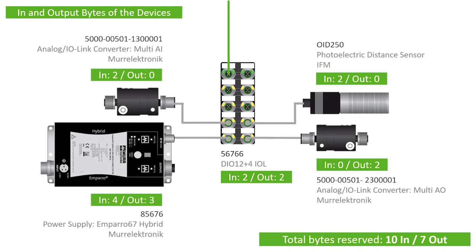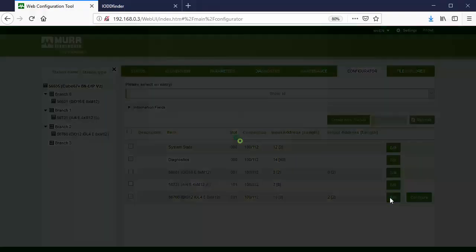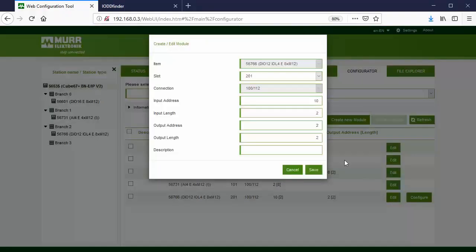If IO-Link devices are connected to the master, the number of input and output bytes of the module must be increased. To figure out the exact number of bytes, check the information for each IO-Link device connected. For this project, reserve the following number of bytes. Change the input and output length of the master and press Save.